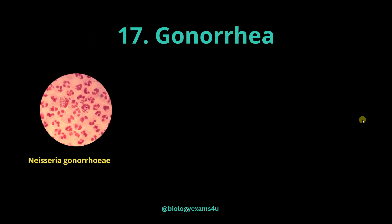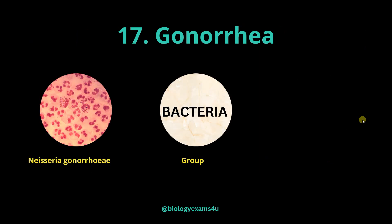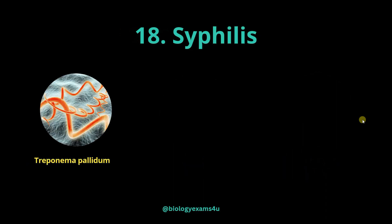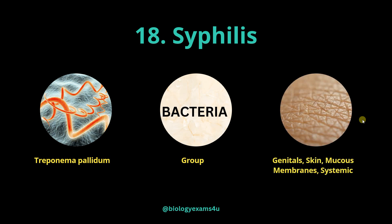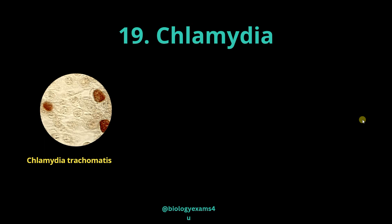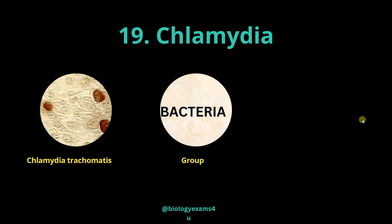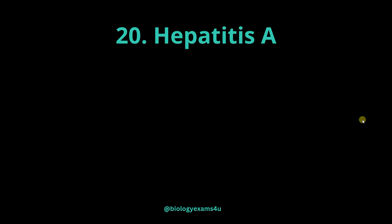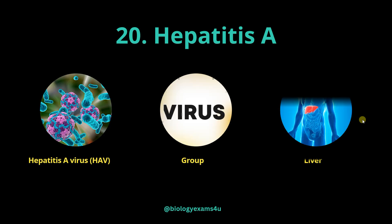Gonorrhea is caused by Neisseria gonorrhoeae, a bacterium that infects the urethra, cervix, rectum, pharynx and also the eyes. Syphilis is caused by Treponema pallidum, a bacterium that causes infection in the genitals, skin, mucous membranes and causes systemic infection. Chlamydia is caused by Chlamydia trachomatis, a bacterium that infects the urethra, cervix, rectum, pharynx and also the eyes at a later stage. Hepatitis A is caused by Hepatitis A virus that infects the liver.